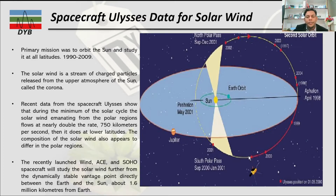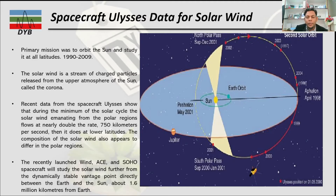There are also recent spacecraft missions studying solar wind. Recent launches include Wind, ACE, and SOHO, which are spacecraft designed to study the solar wind further. These spacecraft are positioned at a dramatically stable vantage point directly between the Earth and the Sun, about 1.6 million kilometers from the Earth.